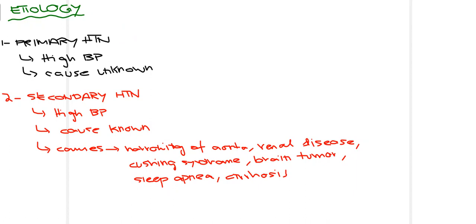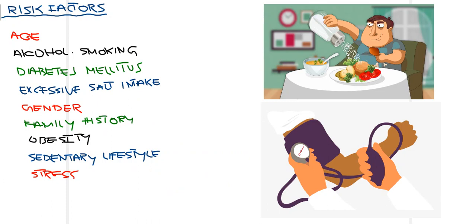There are certain important risk factors for developing hypertension. First and most commonly, age — as a person ages, arteries become stiffer and there is increased plaque deposition. Lifestyle habits such as alcohol consumption and smoking are also risk factors; smoking affects all organs and most commonly the heart by increasing plaque deposition in arteries. Patients suffering from diabetes mellitus also have an increased chance of developing hypertension.